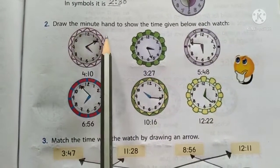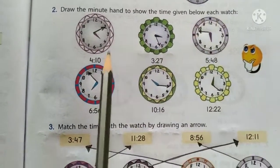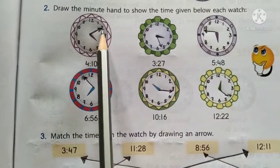Question 2. Draw the minute hand to show the time given below each watch. Here, the time is 4, 10. So here the minute hand will be at 2.